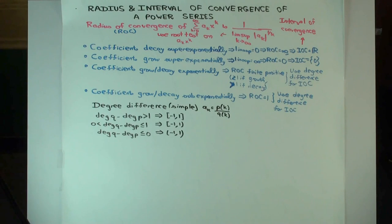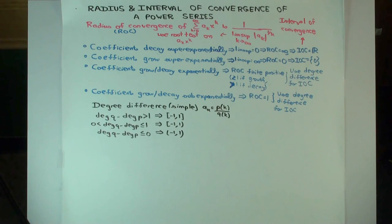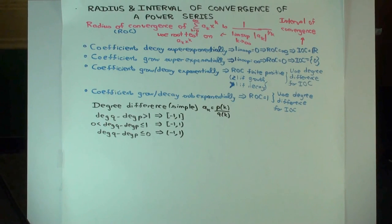We've found the radius of convergence. What's left is the interval of convergence, which means we have to figure out what happens at the two endpoints. Which endpoints? In this case, because the radius of convergence is one and assuming the center is zero, the endpoints are just the numbers minus one and one. We can figure out what happens there by just trying to plug in those values.